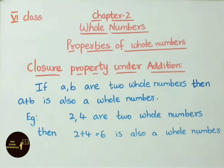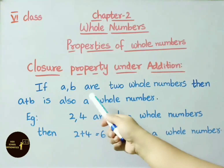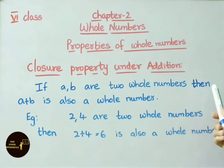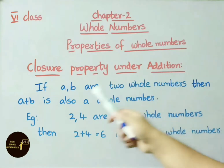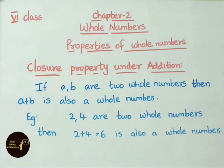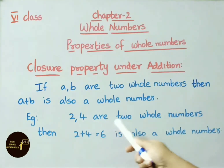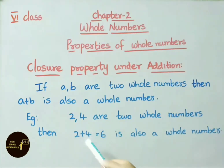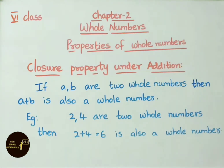Today let us see closure property. First we shall see closure property under addition. If a and b are 2 whole numbers, then a plus b is also a whole number. For example, 2 and 4 are 2 whole numbers. Then 2 plus 4 equals 6, which is also a whole number.